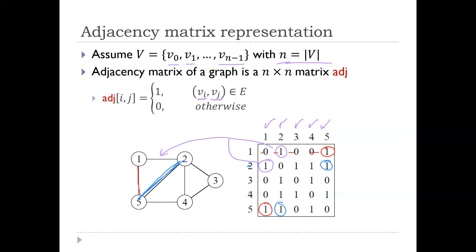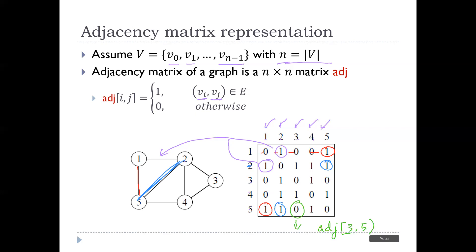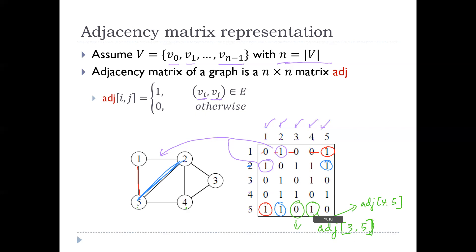In other words, you go to any entry in this matrix — say entry (3,5). You ask: is there an edge between V3 and V5? Going to the graph, V3 and V5 don't have an edge, so this is 0. But for V4 and V5, there is an edge, so that entry is 1. Every entry in the matrix corresponds to the row and column index of your graph nodes — if there's an edge, put 1; otherwise, 0.